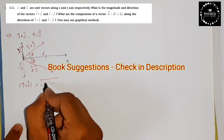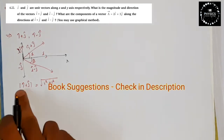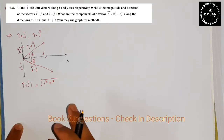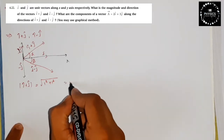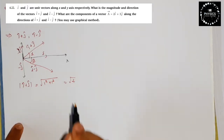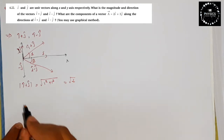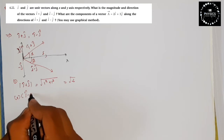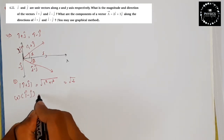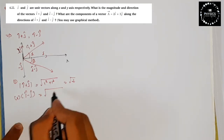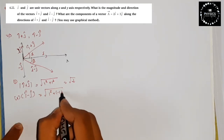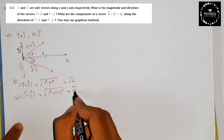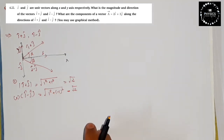For (i+j), its magnitude is √(1² + 1²) = √2. Similarly, for (i-j), its magnitude is √(1² + (-1)²) = √2. So the magnitude of both vectors is √2.